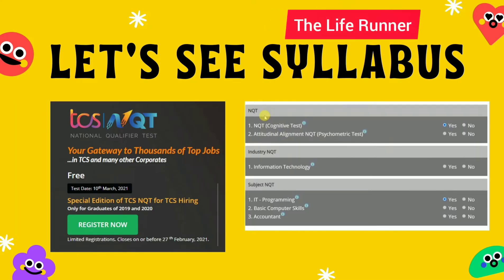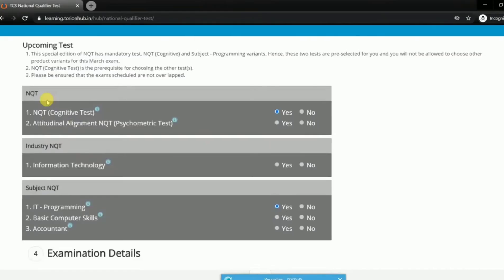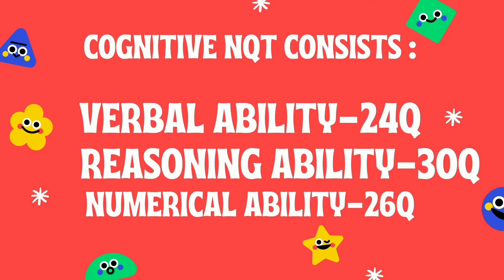While you are registering for this exam, there are two options which are already selected by default. One is Cognitive NQT Test and the other one is IT Programming Subject NQT Test. These two options are previously selected. You need not select any other options. Cognitive NQT Test includes sections like Verbal Ability, Reasoning, and Numerical Ability.